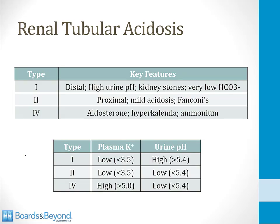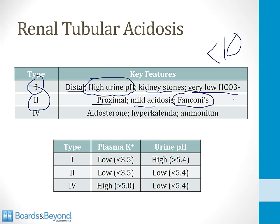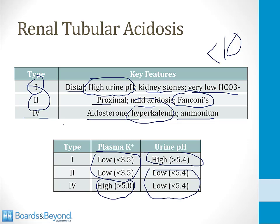I'll finish with this slide summarizing the three forms of renal tubular acidosis. In a type 1 RTA, this involves the distal nephron — the urinary pH is high, patients develop kidney stones, and very low bicarb usually less than 10. In a type 2 RTA, this involves the proximal tubule — it's a milder acidosis, and it often occurs as a component of Fanconi syndrome; multiple myeloma is a classic cause. Type 4 involves hypoaldosteronism, hyperkalemia, and abnormalities of ammonium excretion. Types 1 and 2 are associated with hypokalemia; type 4 is associated with hyperkalemia. The urinary pH is low in types 2 and 4, and high only in type 1. That concludes our video on renal tubular acidosis.